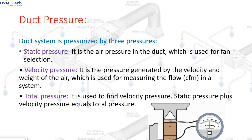Duct pressure: a duct system is pressurized by three pressures. Static pressure is the air pressure in the duct, which is used for fan selection. Velocity pressure is the pressure generated by the velocity and weight of the air, which is used for measuring the flow (CFM) in a system. Total pressure is used to find velocity pressure. Static pressure + velocity pressure = total pressure.